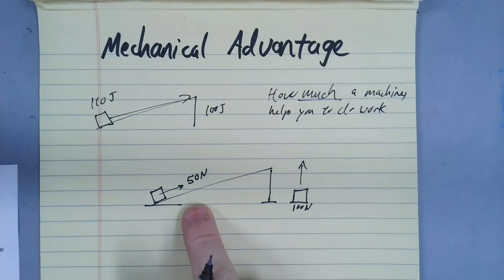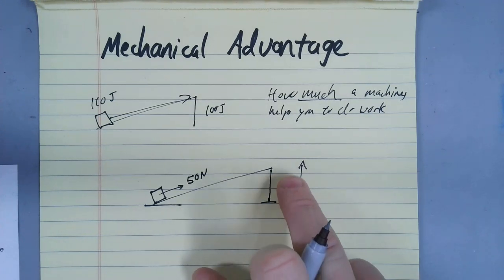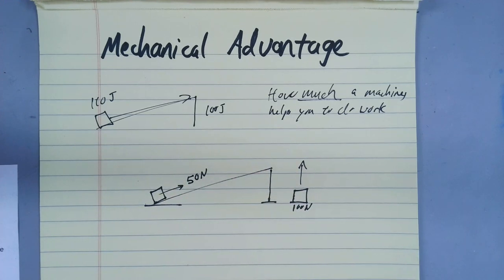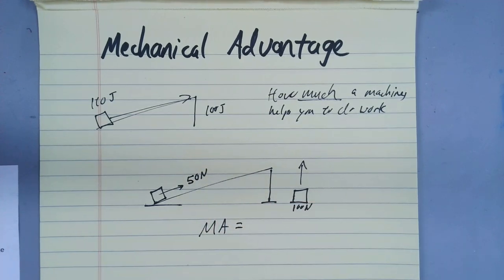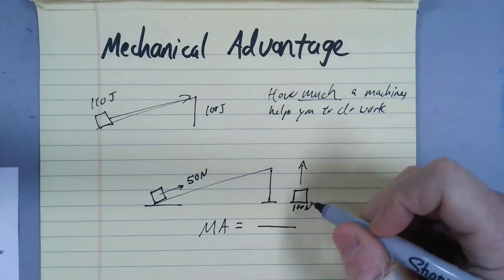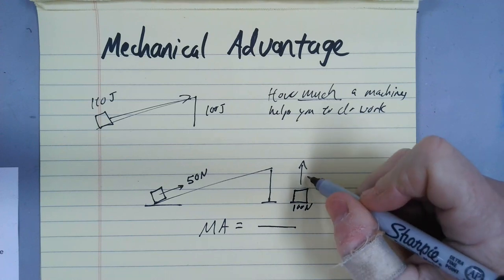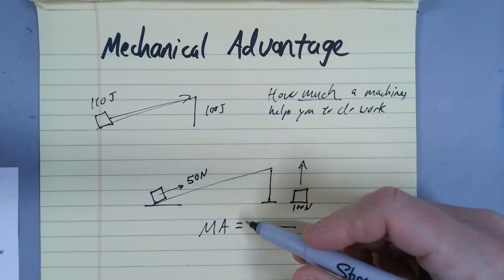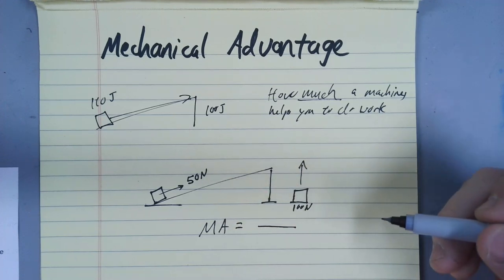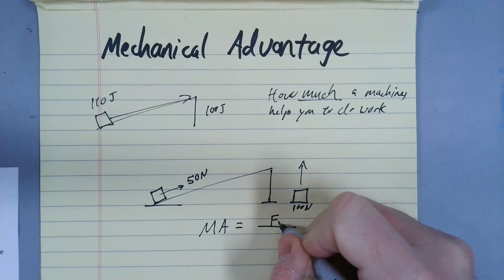So that's how this ramp is helping you. It's allowing me to get this box to that height by using less force. And that's where the formula for mechanical advantage comes in. Mechanical advantage, the actual mechanical advantage describes how much force can you use to do the job compared to the force without using the machine? Let's take a look at the formula here. I was able to move a 100-Newton box only using 50 Newtons of force. It made it a lot easier. The mechanical advantage describes how much easier did it make it for you.